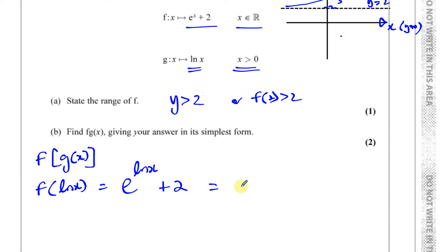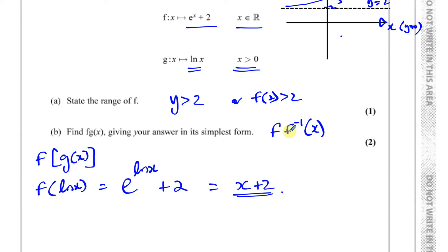Now, e to the power of ln x is actually x. So your answer becomes x plus 2. Why is e to the power of ln x equal to just x? Well, if you have a composite function of an inverse function with the original function either way around, they cancel each other out, and you're left with whatever's in the bracket.